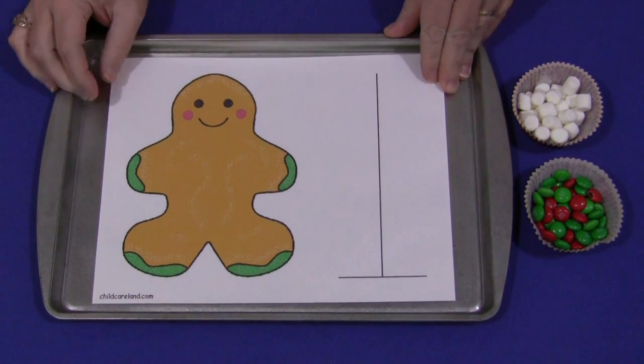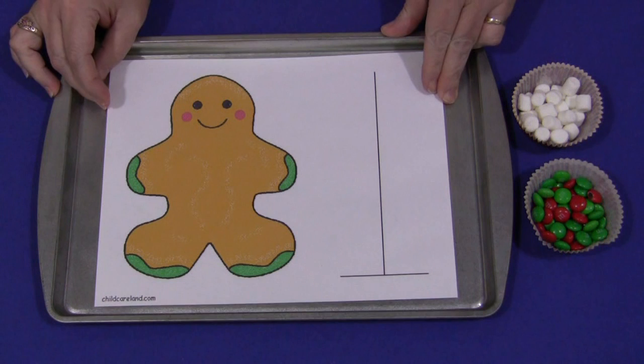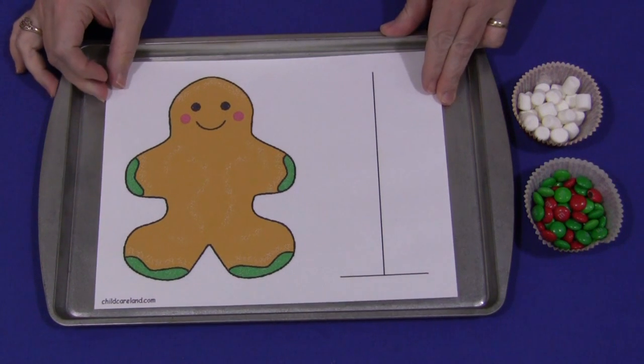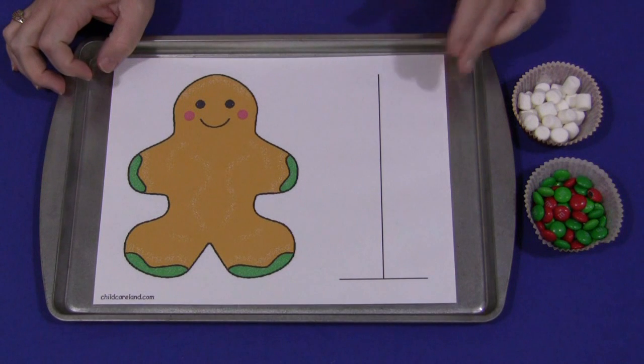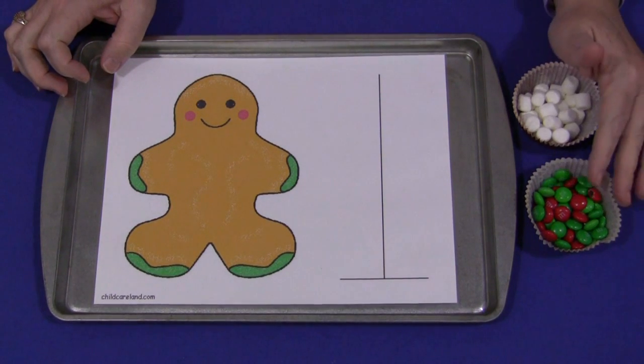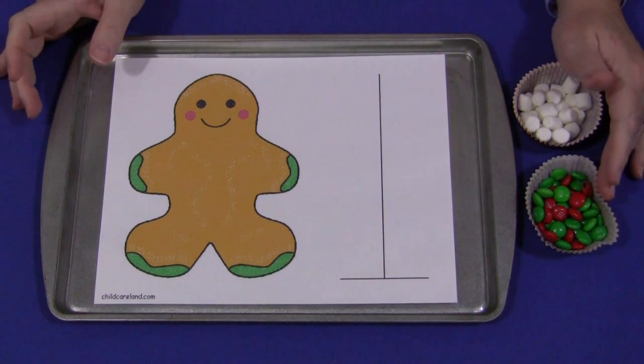And so we just put that on like that and you can use a variety of things that you feel would be appropriate for the age level of the children in your early learning environment. We like to use things such as M&Ms. We've got Christmas M&Ms, mini marshmallows.